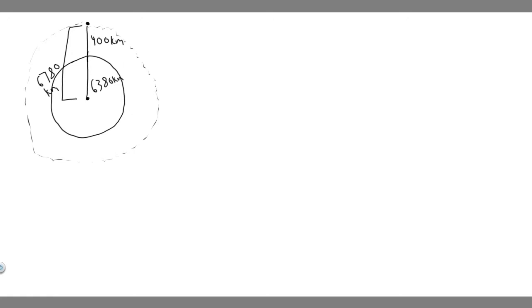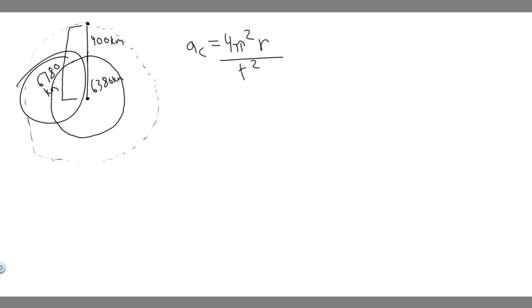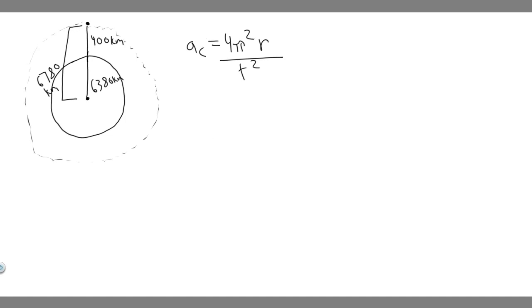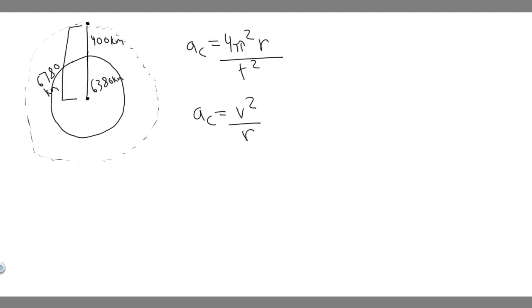We're trying to solve for a_c, the centripetal acceleration. The formula we're going to use is a_c = 4π²r / T², where r is the radius from the object to the center — in this case 6,780 kilometers — and T is the time for one revolution. You may have seen the formula a_c = v²/r, but we're using this one because we're given a time, and it's much easier to use when the period is provided.